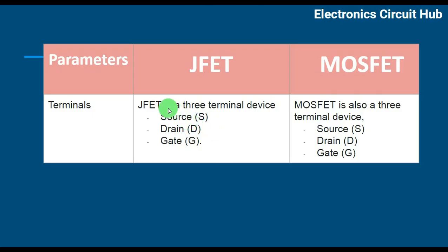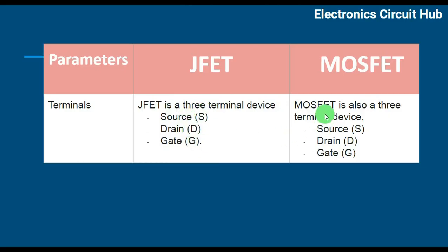JFET Terminals: JFET is a 3-terminal device — Source, Drain, and Gate. MOSFET is also a 3-terminal device — Source, Gate, and Drain.